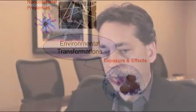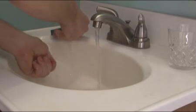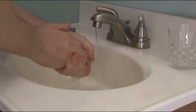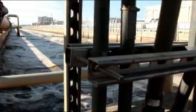Probably the best example is nano-silver. Nano-silver is found in hygienic products — we're talking about toothpaste, we're talking about soaps. Where do you use these products? You wash your hands of them. Where do those particles go? They go down the drain. They go to the wastewater treatment plant, so they're entering the wastewater treatment plant.